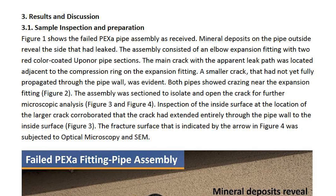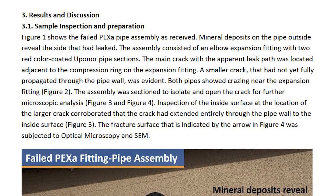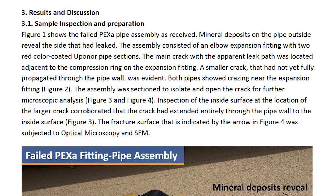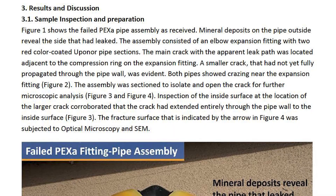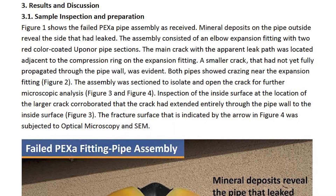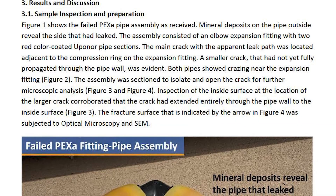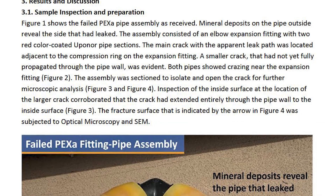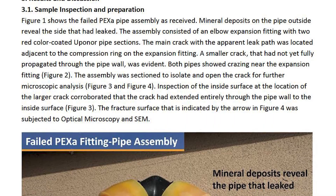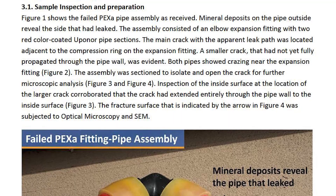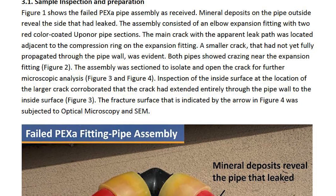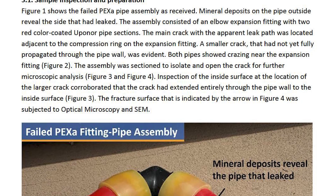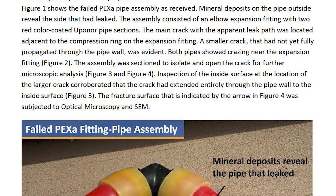Results and Discussion. Section 3.1: Sample Inspection and Preparation. Figure 1 shows the failed PEX-A pipe assembly as received. Mineral deposits on the pipe outside reveal the side that had leaked. The assembly consisted of an elbow expansion fitting with two red color-coded Uponor pipe sections. The main crack with the apparent leak path was located adjacent to the compression ring on the expansion fitting. A smaller crack that had not yet fully propagated through the pipe wall was also evident.